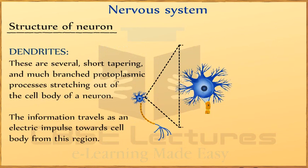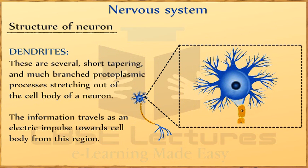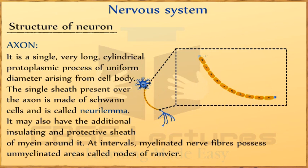Dendrites: These are several short, tapering, much-branched protoplasmic processes stretching out of the cell body of a neuron. The information travels as an electric impulse towards the cell body from this region.